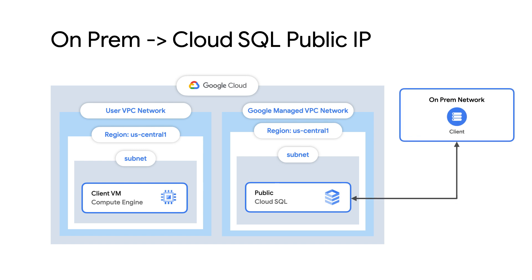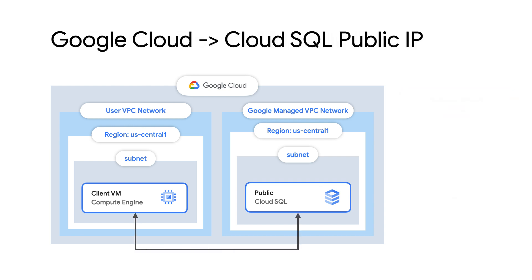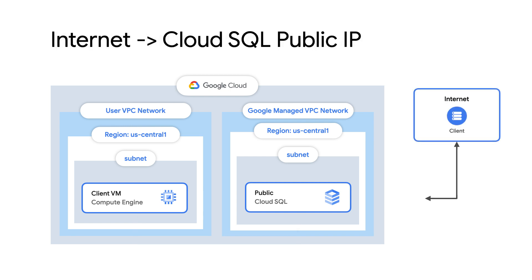Let's take a look at the access patterns from different scenarios. If you want to connect from a client on-prem, the traffic will egress from your on-prem network and access Cloud SQL through a public IP address on the internet. If a client is located in Google Cloud, the traffic will egress through an instance with a public IP address or a Cloud NAT and ingress to the Cloud SQL instance through its public IP address. If the client is located somewhere on the internet, that client can access the Cloud SQL instance directly through its public IP. Any clients making a connection to a Cloud SQL instance hosted with a public IP must be allow-listed through the use of authorized networks. By default, the allow list is empty and nothing can make connections to the Cloud SQL instance. Clients can also connect through a Cloud SQL auth proxy, which we'll discuss more later in this video.